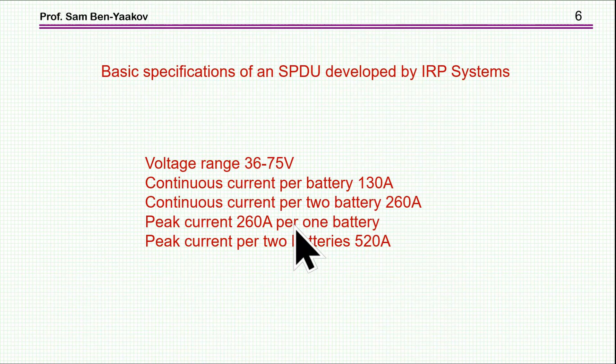So we have a number of types of battery that it can accommodate. We have a continuous current per battery of 130 amps continuous current, per two batteries double of that.